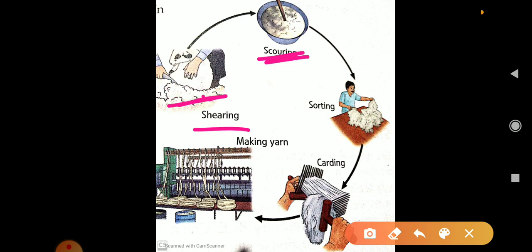Next is sorting, also called grading. After scouring, the damaged or inferior wool is removed. The wool is sorted according to the length, color, and texture of the fiber.